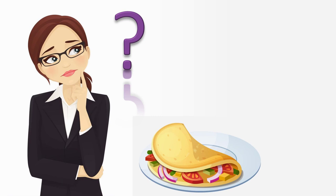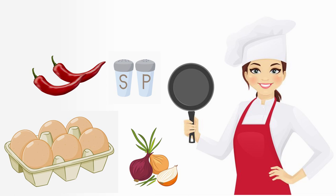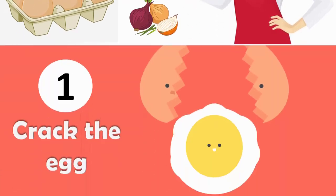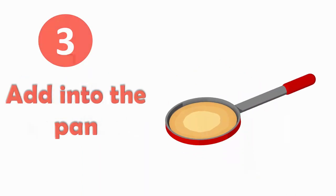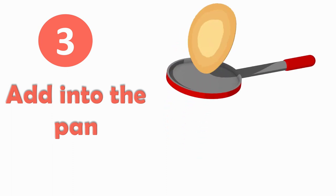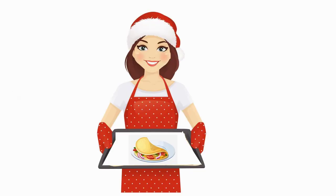These steps should be in the correct order. First, you need to find the ingredients: eggs, onions, chilies, salt, pepper, and a pan. Then crack the egg and mix the other ingredients. Next, add them to the pan, and leave it to cook. Once finished, serve it with your favorite sauce.